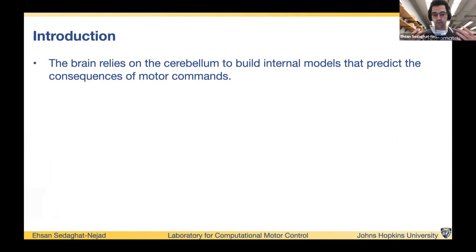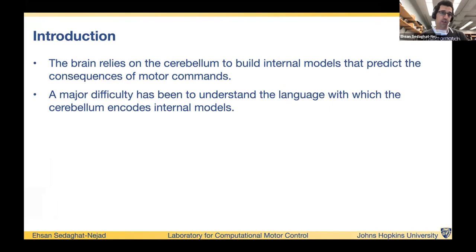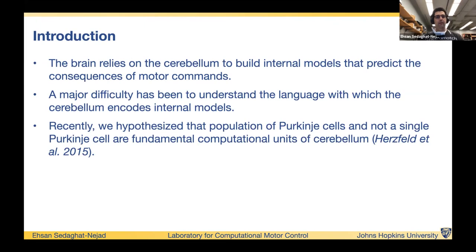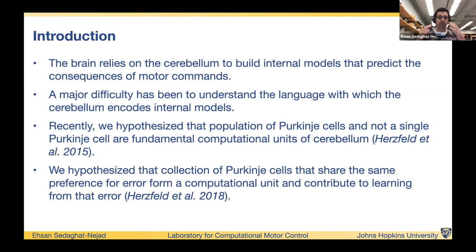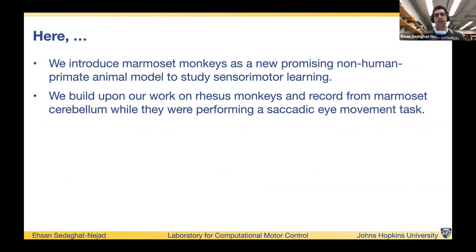The cerebellum is thought to be responsible for encoding internal models and motor commands. A major difficulty in the field has been understanding the coding that cerebellar Purkinje cells are doing. We recently published two papers in Nature and Nature Neuroscience presenting a framework for population coding of Purkinje cells, based on each cell's preference for error. Using that coordinate system, we were able to make sense of Purkinje cell activity in macaque monkeys, and here we expand that work to marmoset monkeys.